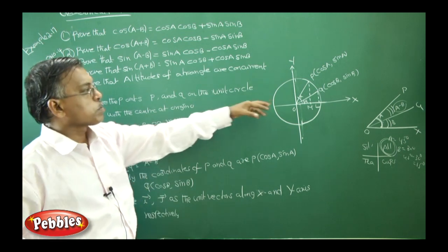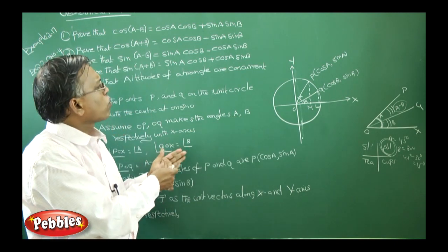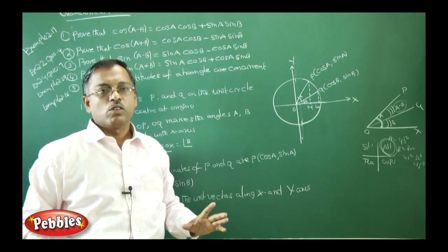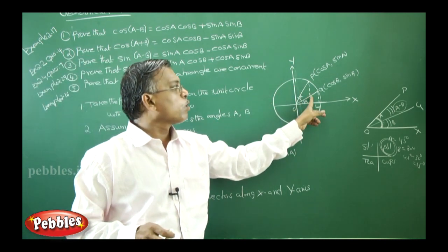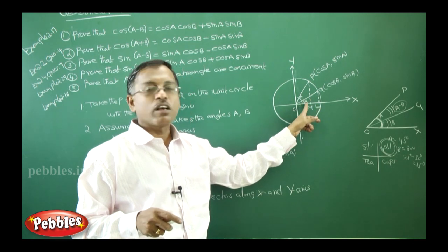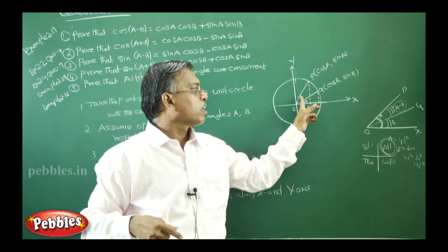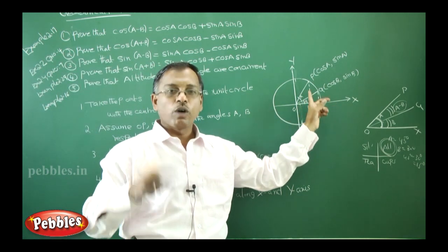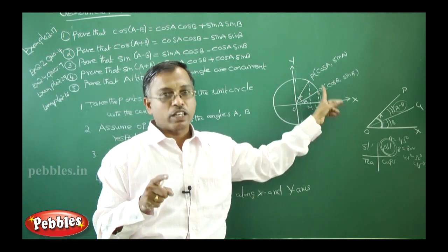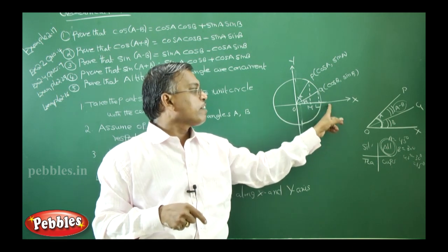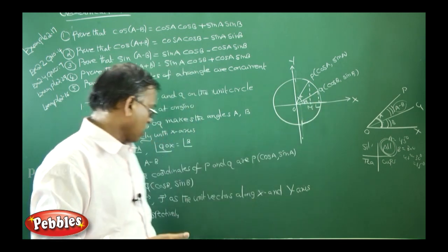What is the first point? Take the points P and Q on the unit circle with the center at the origin O. Because all these five points are almost the same for each and every problem, so you should remember clearly. What is your second point? Assume OP, OQ makes the angles A and B in the positive direction of X axis. Next, what is angle POX? A. Angle QOX? B. What is angle POQ? A minus B. Next, you should tell something about the coordinates of the point P and Q in the fourth point. Next, you are taking I vector and J vector as the unit vectors along X and Y axis.